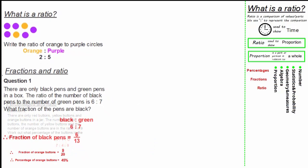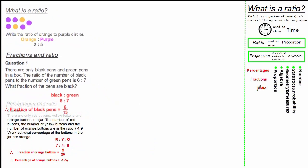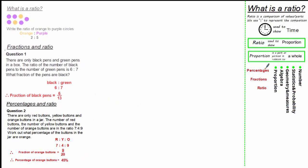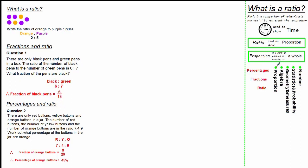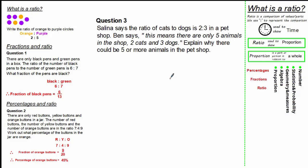Moving all this to the side, you can see why ratio, fractions and percentages all sit inside the proportion strand. So let's extend our knowledge further and look at another exam question. In this question, it says, Selina says the ratio of cats to dogs is 2 to 3 in a pet shop. Ben says this means there are only 5 animals in the shop, 2 cats and 3 dogs. Explain why there could be 5 or more animals in the pet shop.